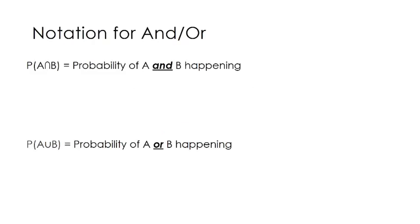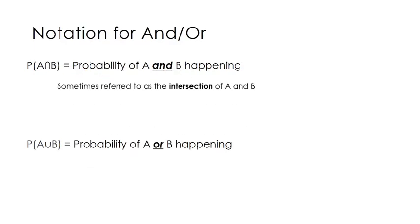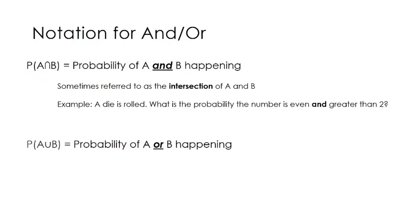I want you to know this notation. If you see this symbol right here, that means the probability of A and B happening — of both A and B happening. It's sometimes called the intersection of A and B. An example would be rolling a die: what's the probability that your number rolled is even and greater than 2? That's an AND, so we would use this notation: even and greater than 2.